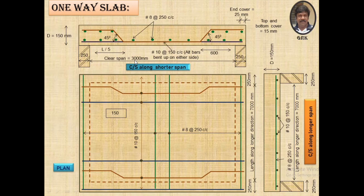Let us estimate the quantity of steel provided in this one-way slab of dimension 3 m × 7 m of thickness 150 mm. For the main reinforcement, one straight bar is placed at 150 mm center to center, meaning two straight bars will be spaced at 300 mm center to center. Similarly, for the crank bars, the effective spacing will be double — also 300 mm center to center.